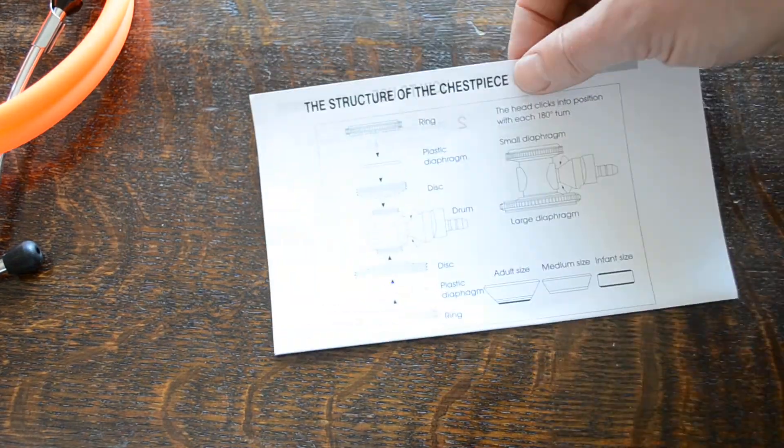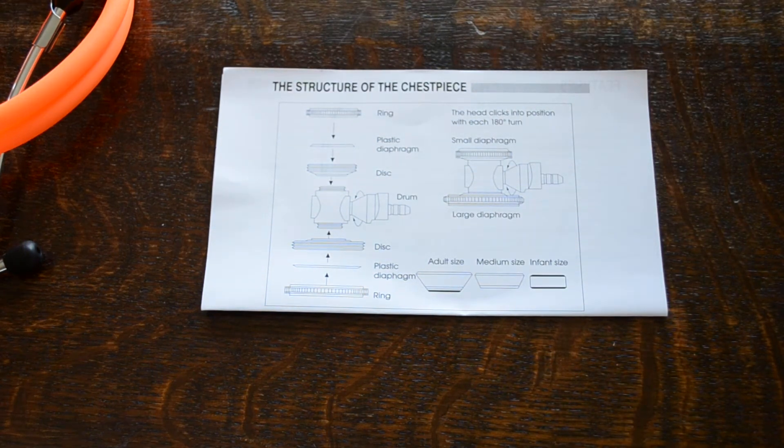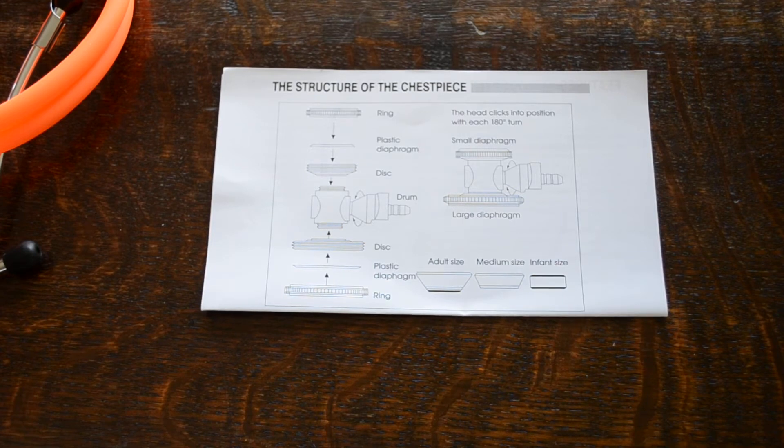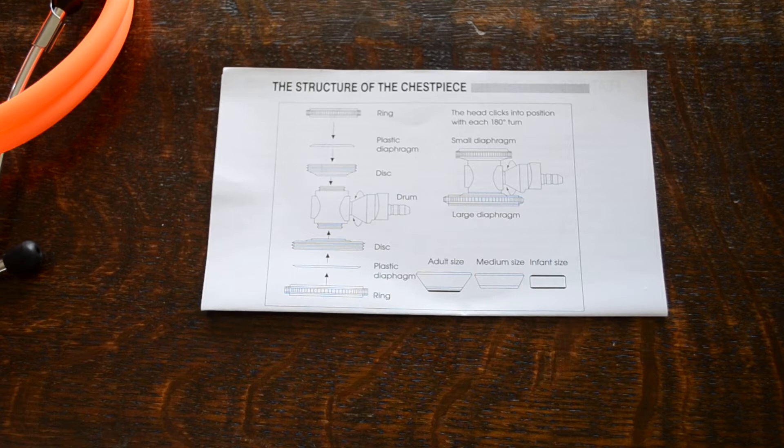Let's just close that up for you and just show you the structure for the chest piece guidance on here. Now Sprague's offer basically a choice of how you can have them set up. It's a matter of personal preference, but it gives you a five in one option basically.